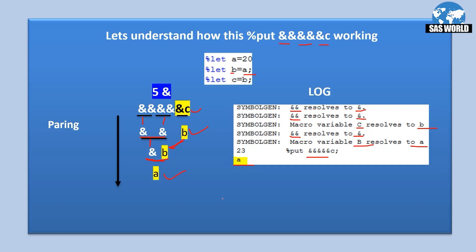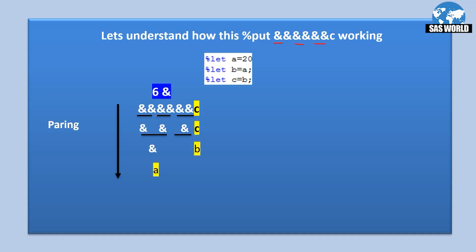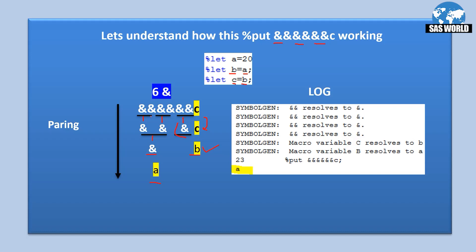With six ampersands — even — three pairs form. In the first pass all pair up, C passes through unchanged. In the second pass two ampersands resolve to one, leaving three ampersands — so ampersand C resolves to B. Then one ampersand is left, so ampersand B resolves to A. The log confirms: three pairs resolve to three single ampersands, then ampersand C resolves to B, then ampersand B resolves to A.